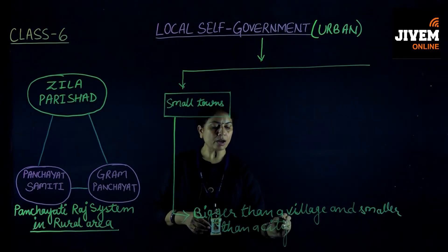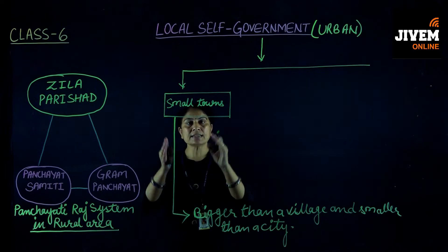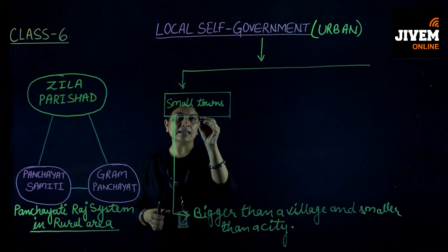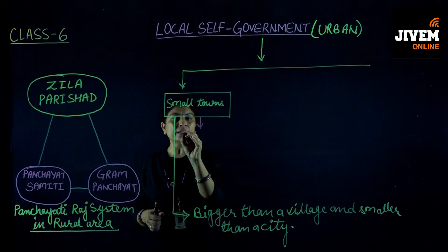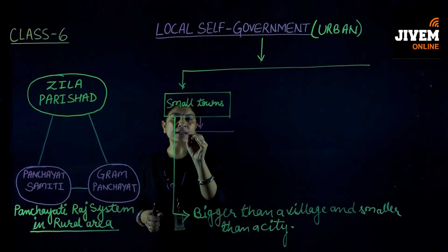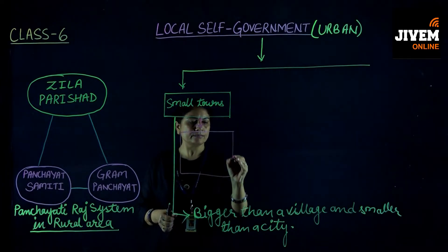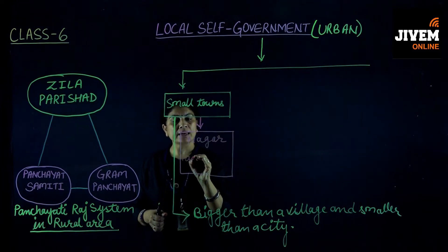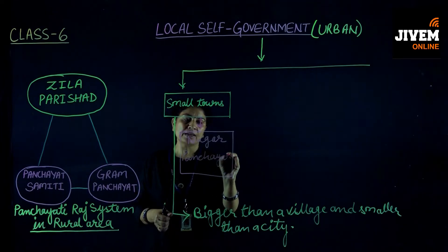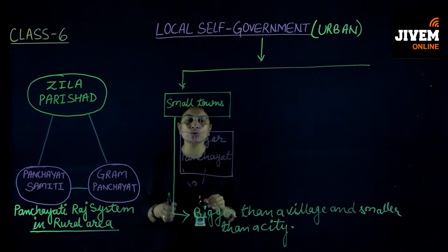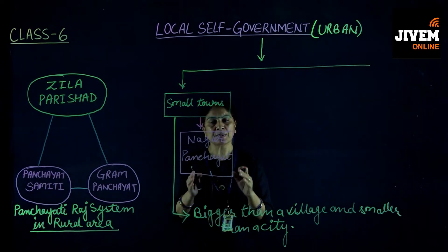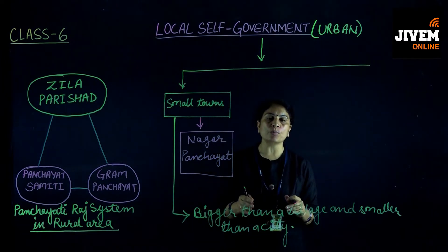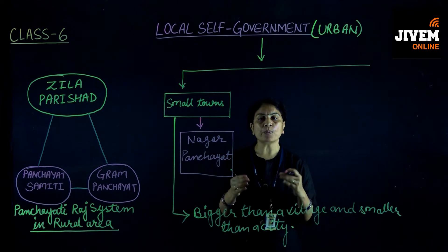An area that is smaller than a city but bigger than a village is called a small town. To manage these small towns, the local self-government body is called the Nagar Panchayat. The local people choose their own representatives, who then form the government and solve the basic needs, basic amenities, and problems of the local population.